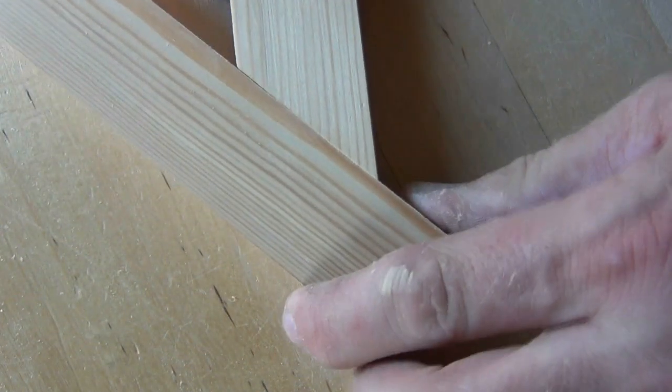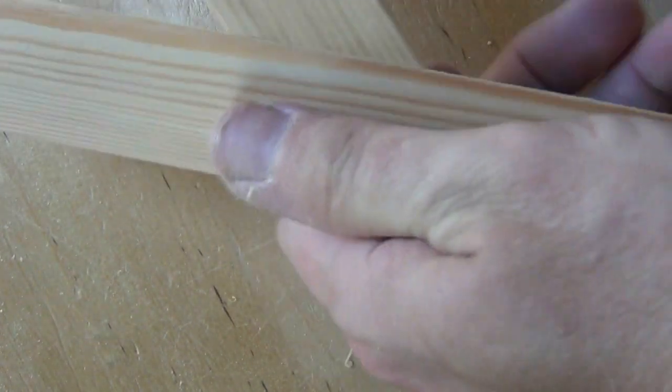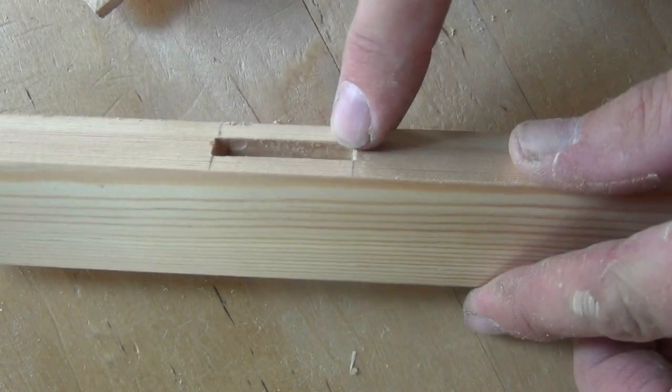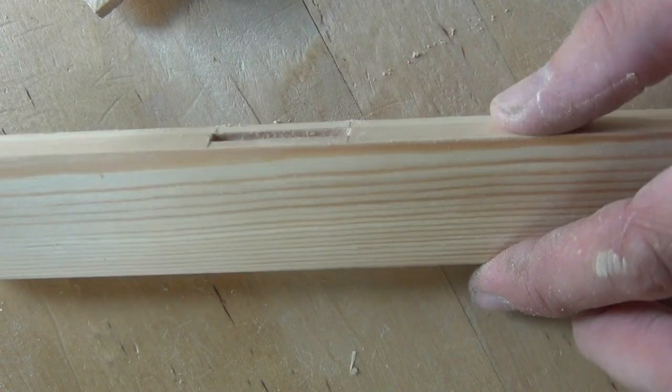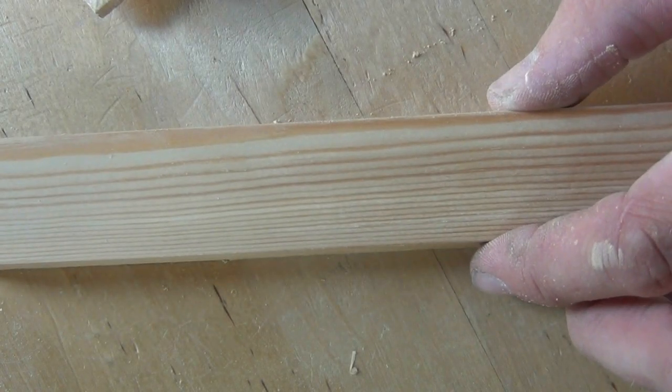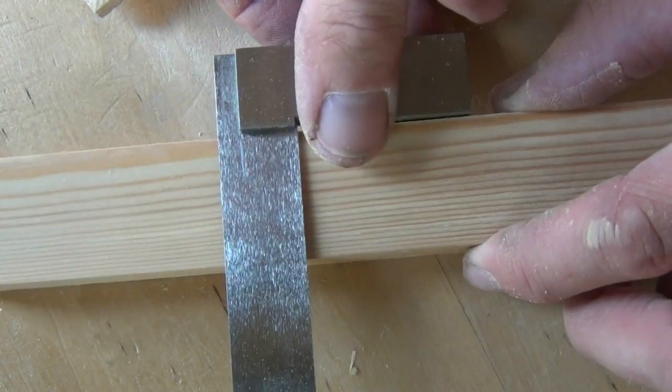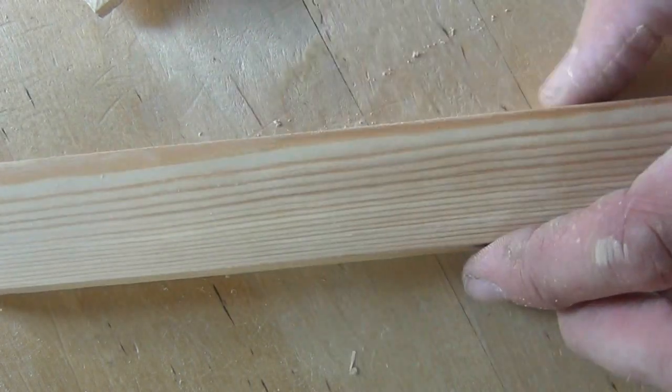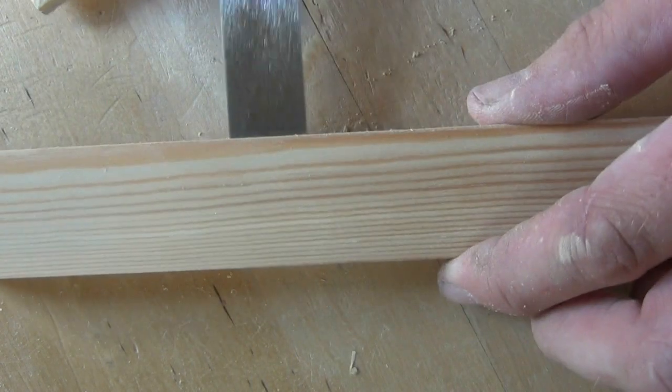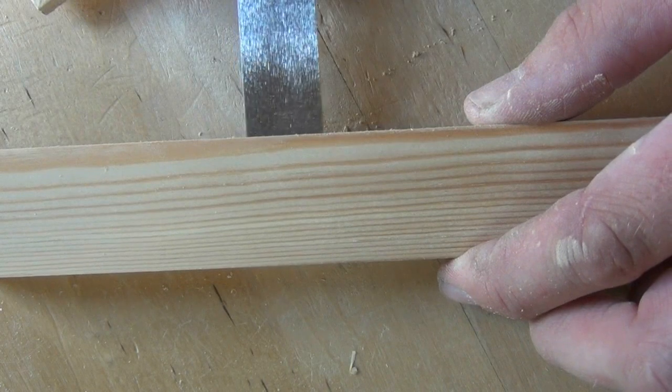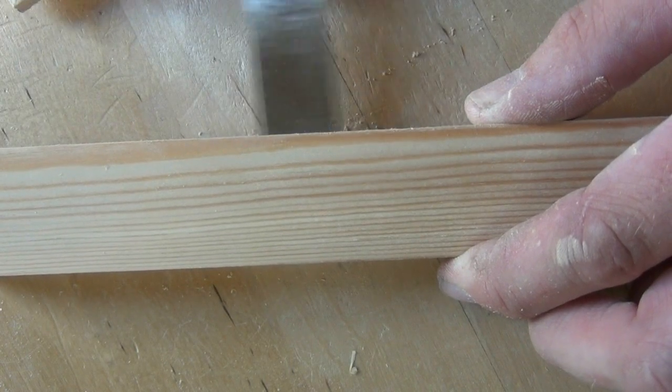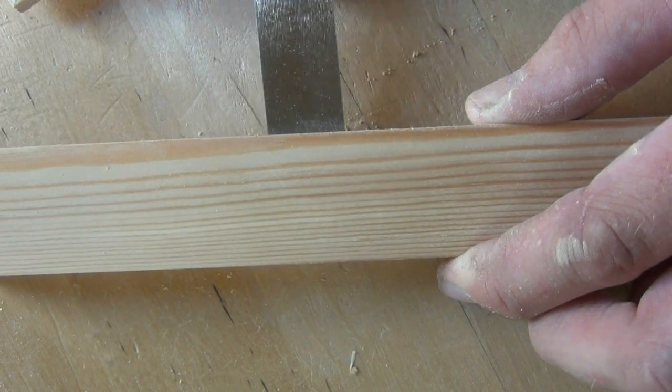Before I finally glue this together let me just open it up and explain the joint again. We've cut a mortise in the one component and we've cut that square to the face like so. That will prevent our second component from moving up or down in that joint.